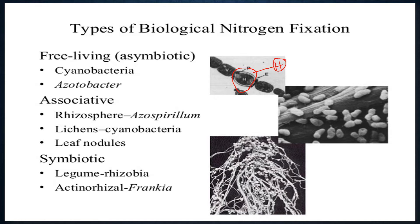The nitrogenase enzyme mainly functions in the absence of oxygen. In heterocysts, there is less oxygen, so cyanobacteria mainly concentrate on fixing nitrogen. The other picture shows root nodules, where 70 percent of nitrogen is fixed through symbiotes — both free-living and symbiotic types.